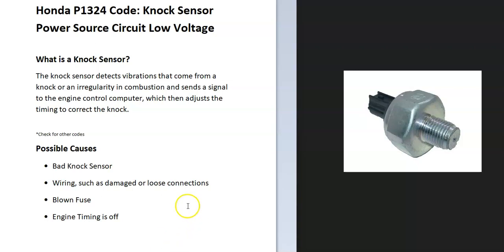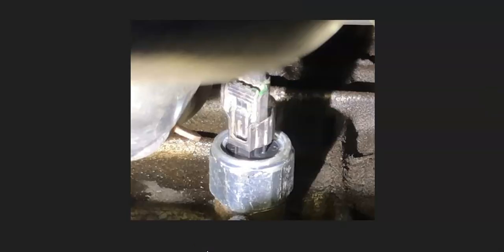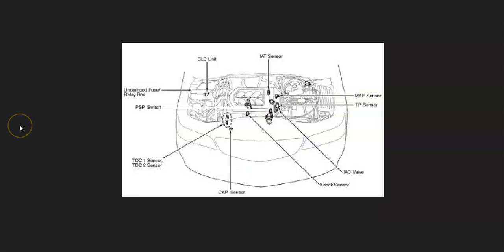The first thing to do when you get this code is to go locate where the knock sensor is located on your particular engine, since there can be some differences between Hondas. It's always a good idea to get a diagram for your particular engine and year. For example, here's a 2002 Honda Odyssey and the knock sensor is going to be right up here on the side of the engine.